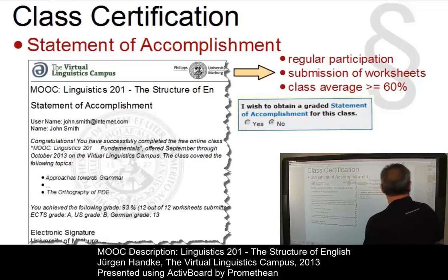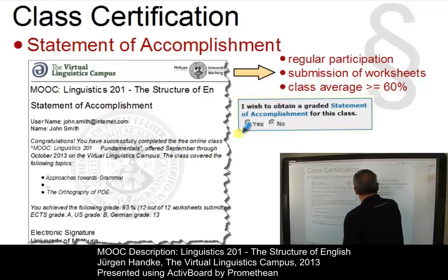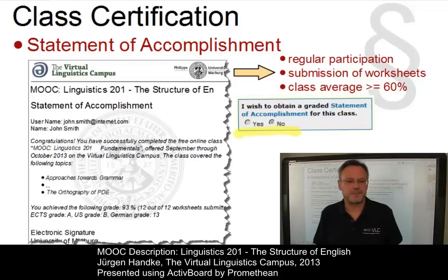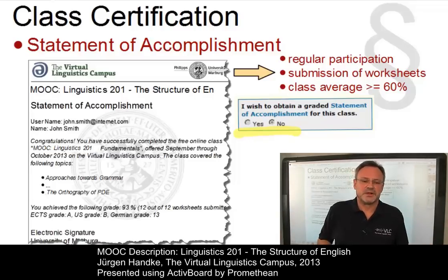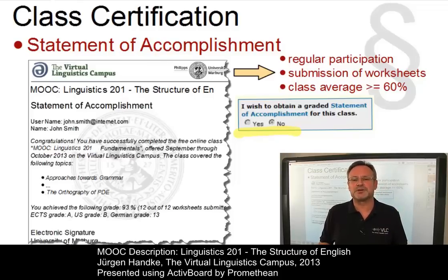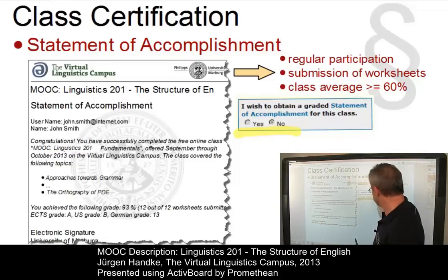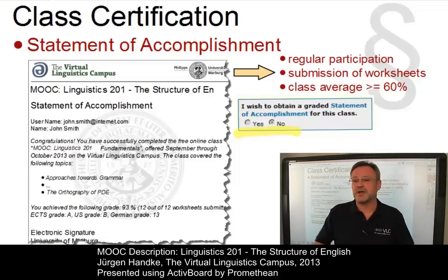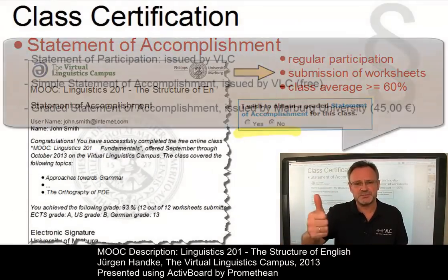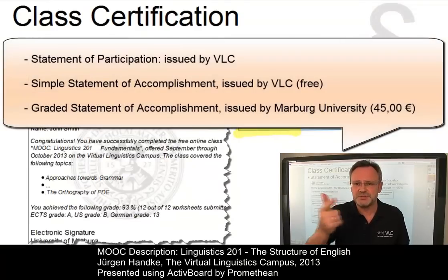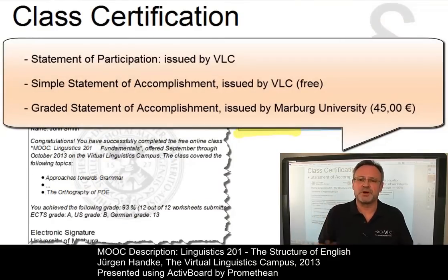The choice can be made on the class start site with a simple mouse click, and you can take this decision during the entire activation period of the class. If you change your mind, you can always reset your decision. So these are the three options: Statement of Participation, Statement of Accomplishment, and Graded Statement of Accomplishment for a small amount of money.